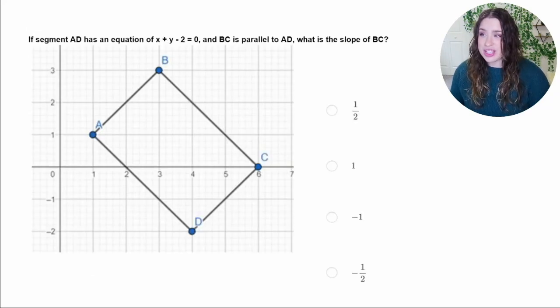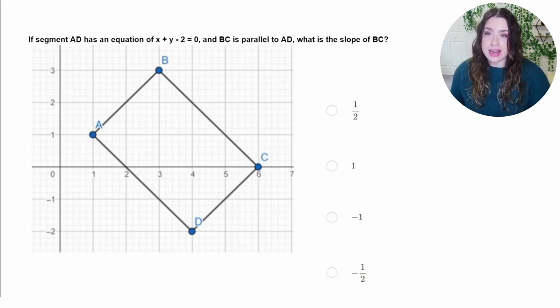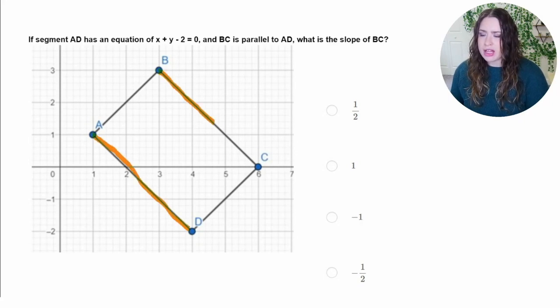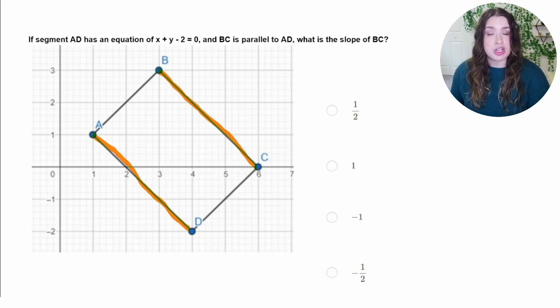Let's take a look at this question. If segment AD has an equation of x plus y minus 2 equals 0, and BC is parallel to AD, what is the slope of BC? So let's take a look at AD. So here's AD and BC. They're parallel, which means they have the same slope. So there's two ways that we can approach this problem, especially because they give us the graph. I'm going to show you another method that's more algebraic in case you encounter a problem that doesn't have a graph.